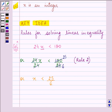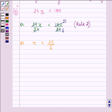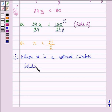Now, when x is a natural number, then the solution set will be 1, 2, 3 till 4, right?